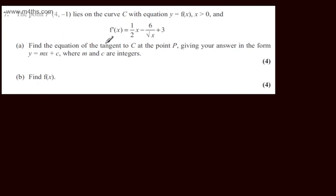In part A we're asked to find the equation of the tangent to C at the point P, given our answer in the form y equals mx plus c where m and c are integers. The question carries four marks. The equation of a tangent is just the equation of a straight line. For the equation of a straight line we need two things: a point that it goes through, which we've already got, which is P, and also a gradient.